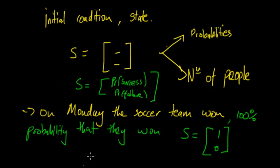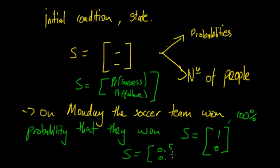Another question could be that they have a fifty percent chance of winning one day. So if they had a fifty percent chance of winning, then S would equal 0.5, 0.5. This initial condition is when you know for certain the probabilities and it's not affected by the previous outcome, then you can sub it in and work it out.